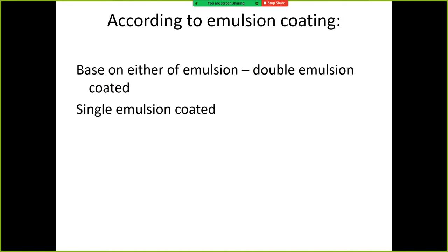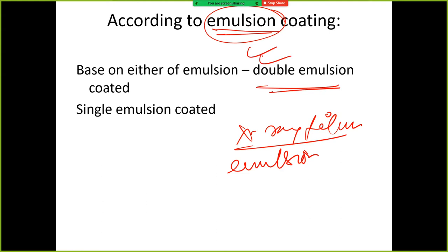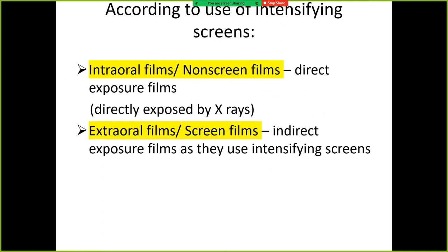According to emulsion coating — x-ray films have a coating called emulsion coating. This can be either double emulsion coating — on both sides — or single emulsion coating. So this is the classification according to emulsion coating.